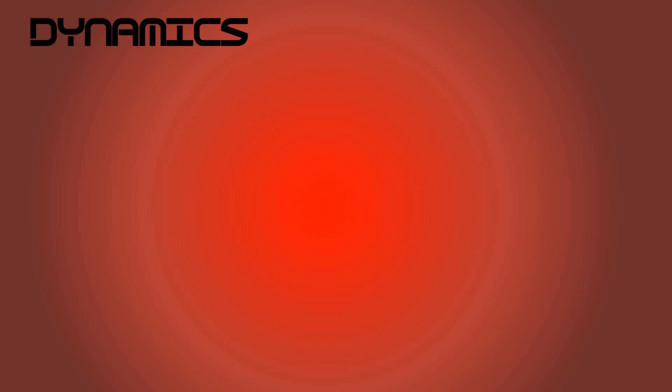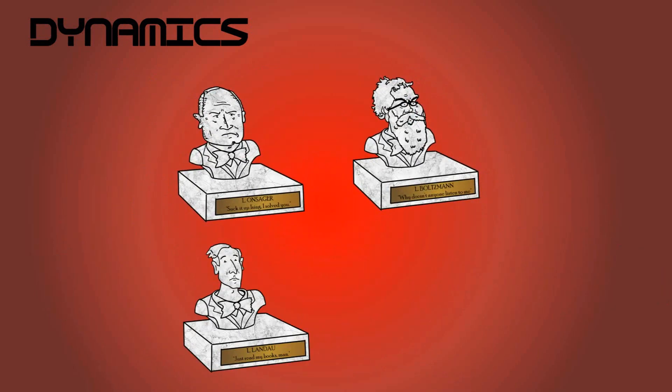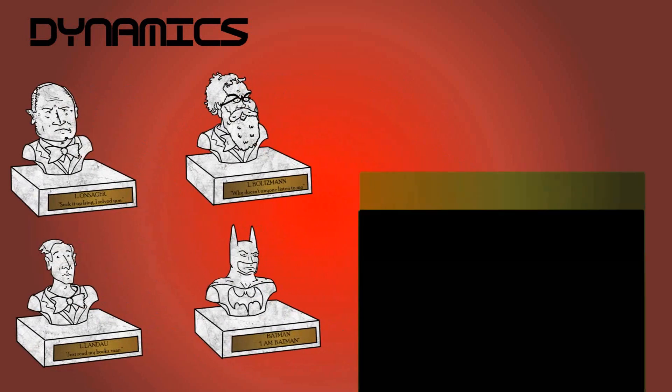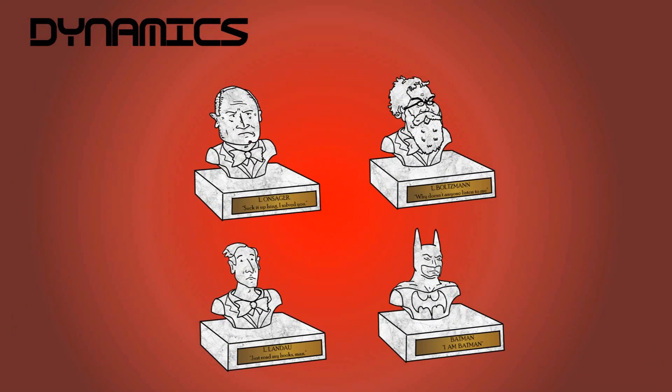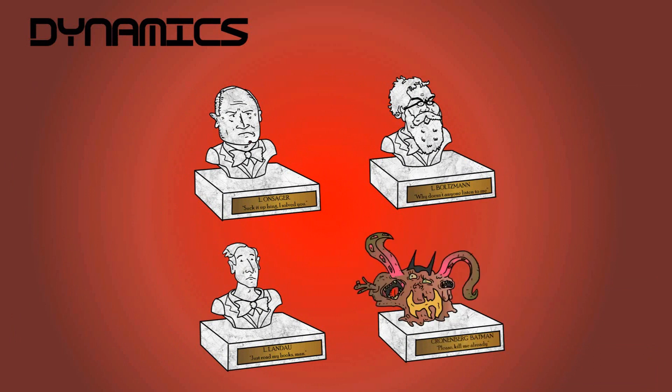We would suppose that our society is very simple and just formed by 4 individuals. Onsager, Boltzmann, Landau and Batman. Wait. Batman's a scientist? It's not Batman! Well, not Batman, cause he's not a scientist, and we have another B. Let's just put Cronenberg Batman, the Batman from the dimension in which everyone is a Cronenberg. In this dimension, Batman is a scientist, so everything works fine for our model. So, anyway, we have Onsager, Boltzmann, Landau and Cronenberg Batman. For short, we would just name them O, B, L and Z.